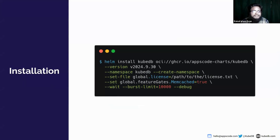Here you can see the installation process. To install KubeDB on your Kubernetes cluster, you can use the Helm command. But you need a license to install it. You can visit kubedb.com to obtain the license.